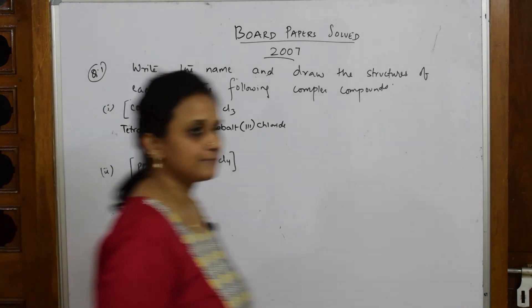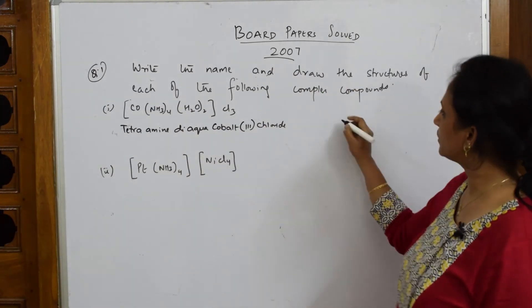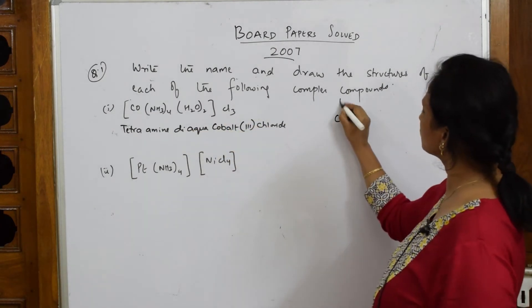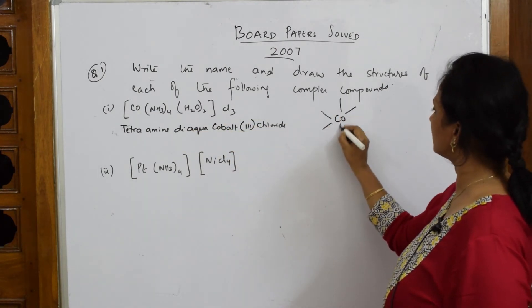When I have to draw the structure of this, how do I do it? I make cobalt in the center. Total 4 plus 2 equals 6. So the structure would be 6 octahedral. So fill it.